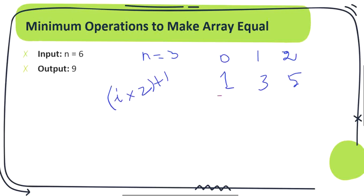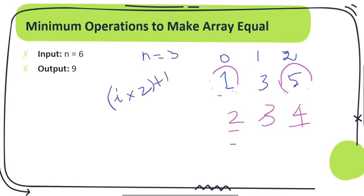Let's pick 1 and 5. We add 1 to the first element and subtract 1 from the last, so the array becomes 2, 3, 4. Again pick those same elements at index 0 and 2, add one and subtract one, and the array becomes 3, 3, 3. We used two operations — that is the minimum number of operations required, and that is our output.